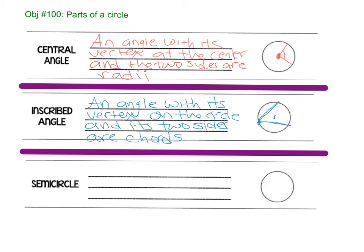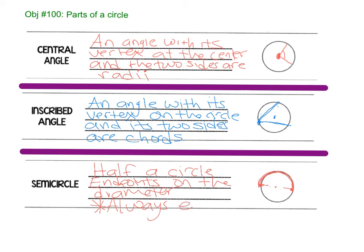Alright, what's a semicircle? A semicircle is half, half a circle. So from here to here, a semicircle is half the circle. Okay. And it always equals 180 degrees. Its endpoints are on a diameter. Endpoints on the diameter. And it always equals 180 degrees. Because a whole circle is 360. So a semicircle is 180.